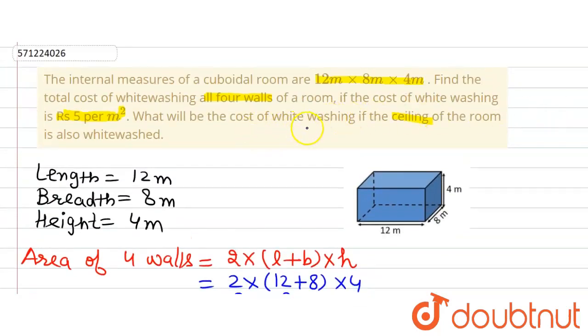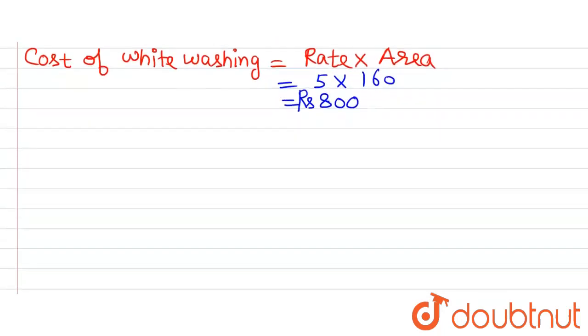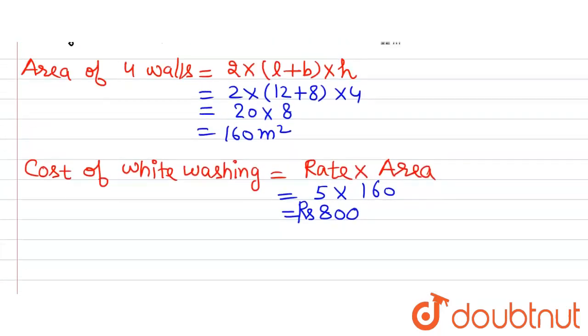The question further asks: what will be the cost of whitewashing if the ceiling of the room is also whitewashed? Now we have to consider the area of the ceiling as well.